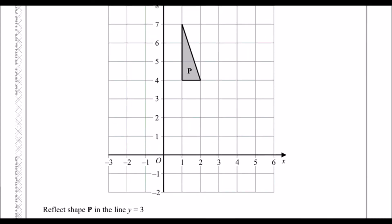Question 18: reflect shape P in the line y equals 3. The line y = 3 is the mirror line. From each point we go the same distance away from the mirror line on the other side. The point at (1, 7) is 4 away from y = 3, so it maps to 4 on the other side. The point at (2, 4) is 1 away, so it maps 1 on the other side. We join the three corners to form the new reflected shape.